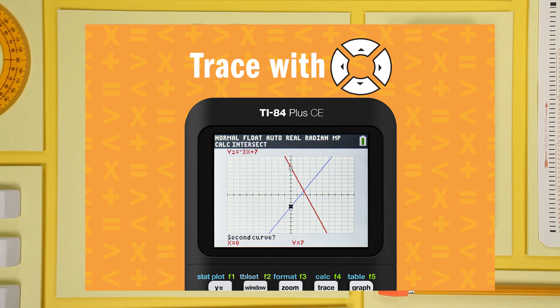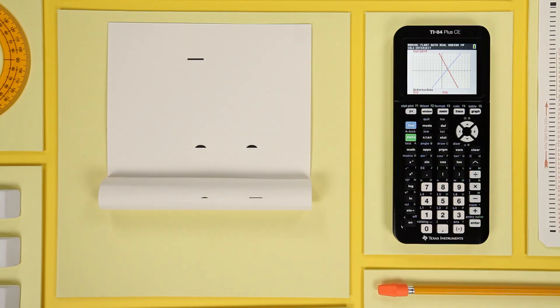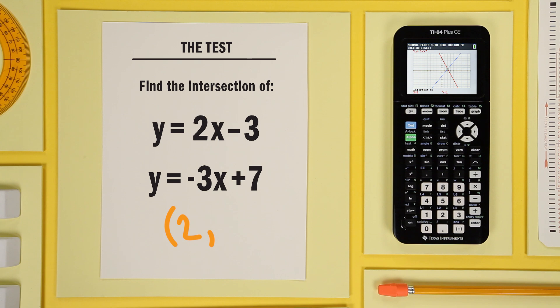Use the up and down arrow keys and enter to select the two graphs that intersect. Now move the cursor to where the two graphs appear to intersect. Hit enter. The calculator will determine the point of intersection. The graphs intersect at the point 2, 1.